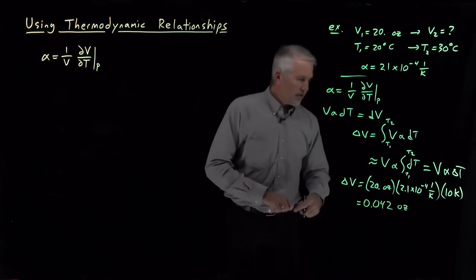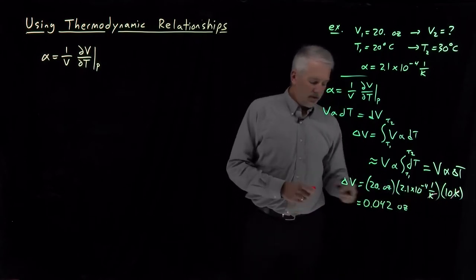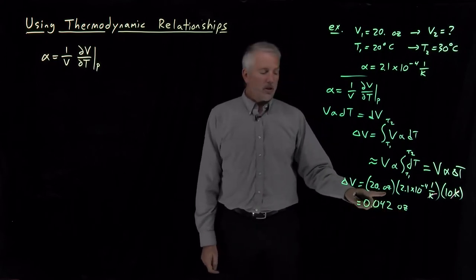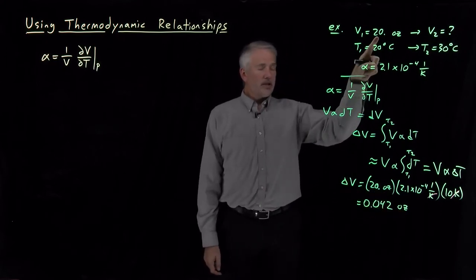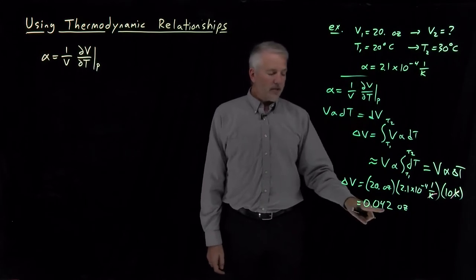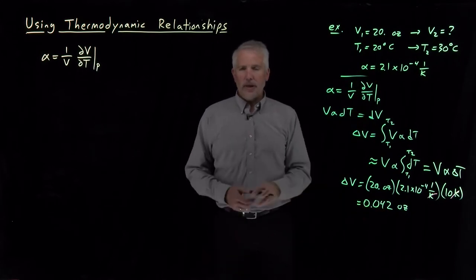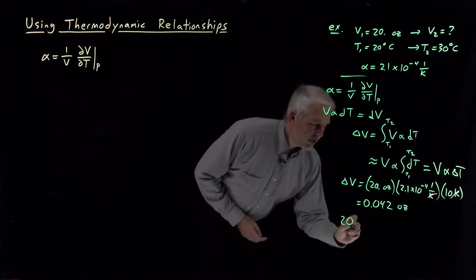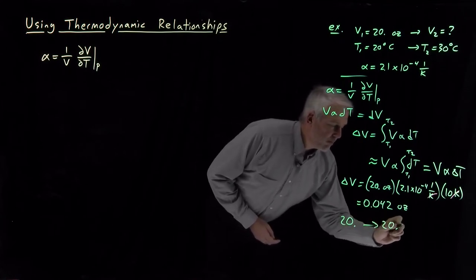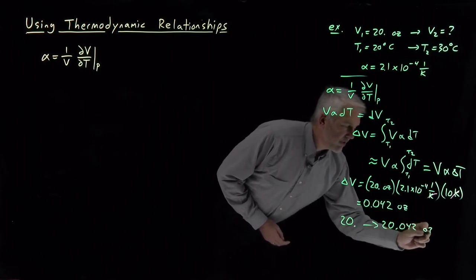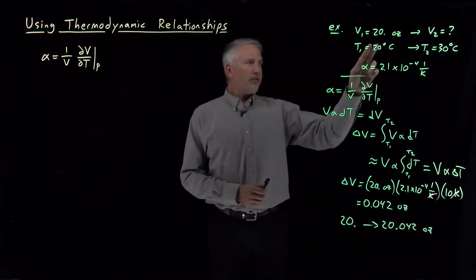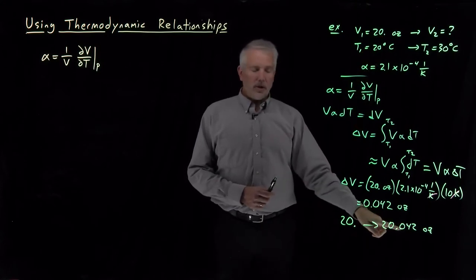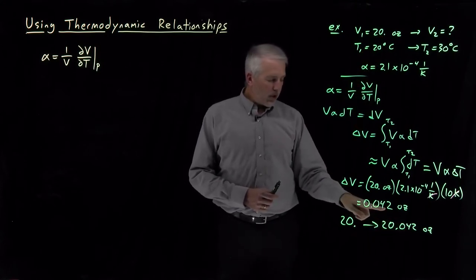Units-wise, Kelvin cancels as it should, and my change in volume just has units of the same volume that I started with. So that 20-ounce container of water is going to expand in volume by 0.042 ounces as I heat it up by 10 degrees. So the volume is going to change from 20 to 20.042 ounces, and at least to the number of sig figs that I cared about when I wrote the problem down, that's a negligible change in volume.